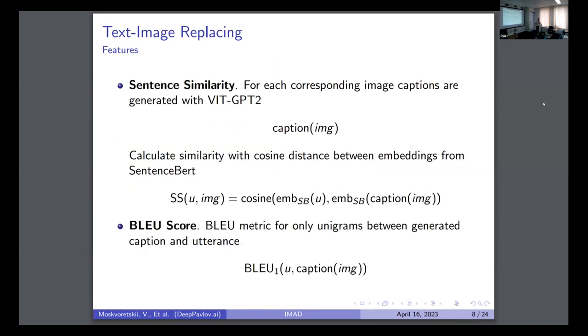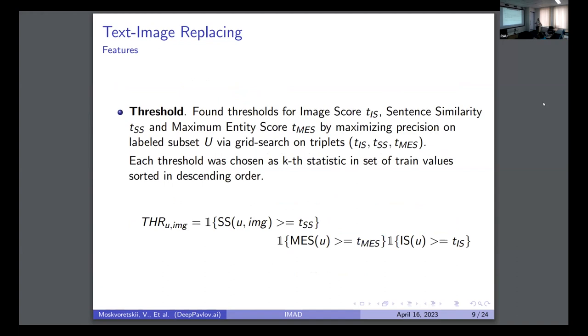The next features rely on the generation of text from an image. Firstly, we take all our utterances and paired images and we generate captions for them. After that, we look at the cosine similarity between their embeddings from sentence-BERT. It is the measure between generated caption and initial utterance. Then we take the BLEU score between initial utterance and captioning. It is notable that we take BLEU score only for unigrams because it was better. And so the last one is thresholding, and it is quite heuristic. We just brute-forced the threshold and found the best one for cross-validation.